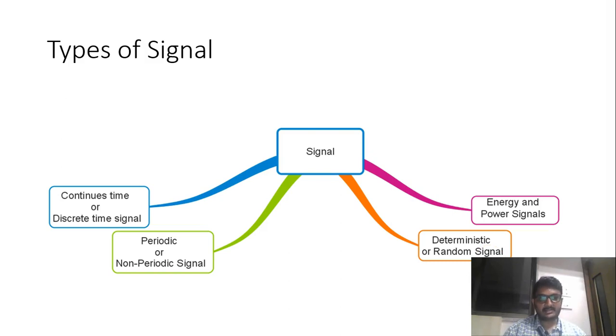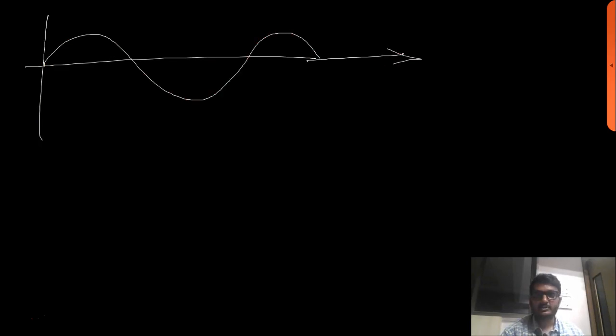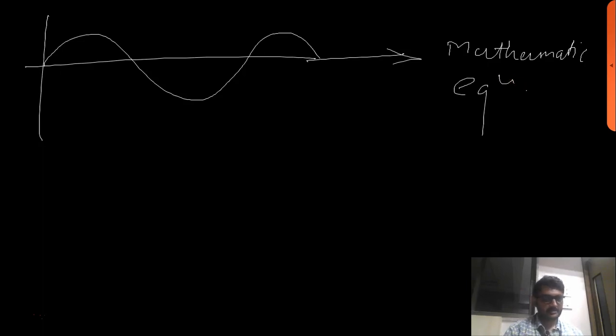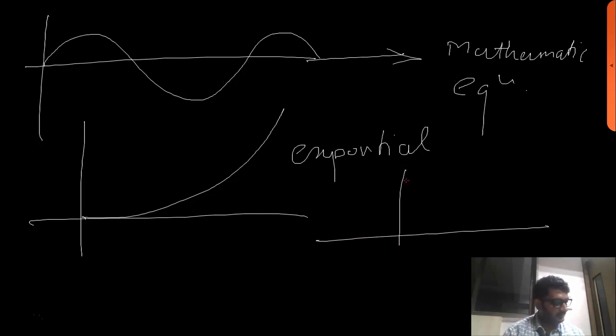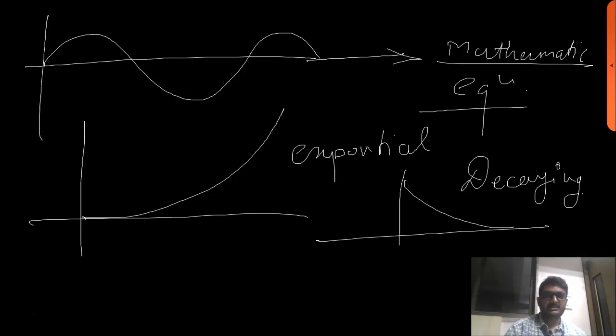We can classify a signal as either deterministic or random. If we can write or know the pattern of the signal, then it is called a deterministic signal. A very famous example is the sine wave — its pattern is known and we can represent it in a mathematical equation. Similarly, an exponential signal or a decaying signal — we can write mathematical equations for these signals, and therefore these are deterministic signals.